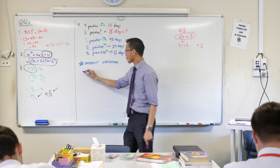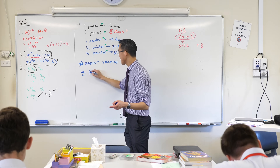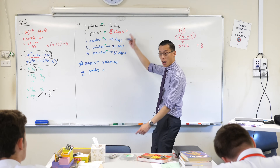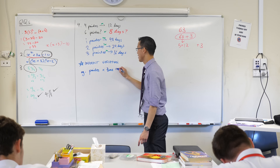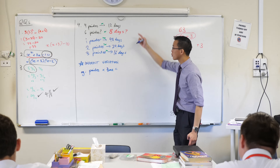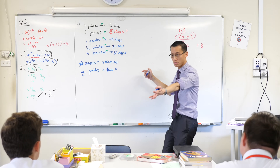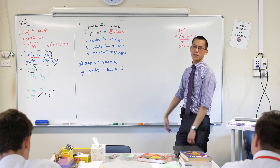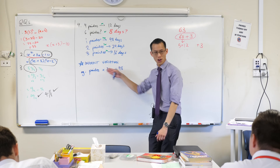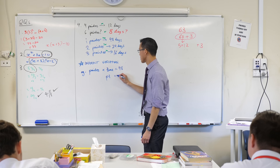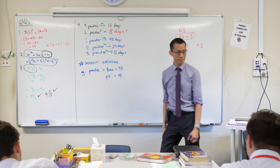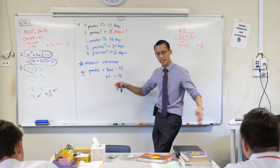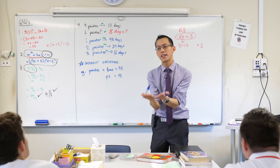The idea here — this example was painters — the number of painters times the amount of time spent, in our example, always equals the same number, which was 48. So mathematicians, being famously lazy, we don't want to write 'painters' and 'time' every single time, so I'm just going to write P × T = 48. This is an indirect variation relationship — when two things are connected and always multiply to give the same value.